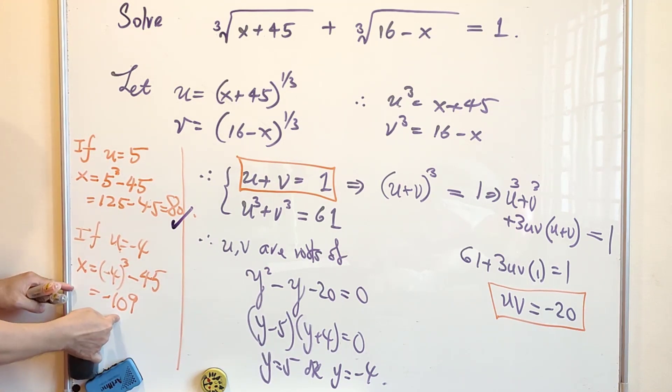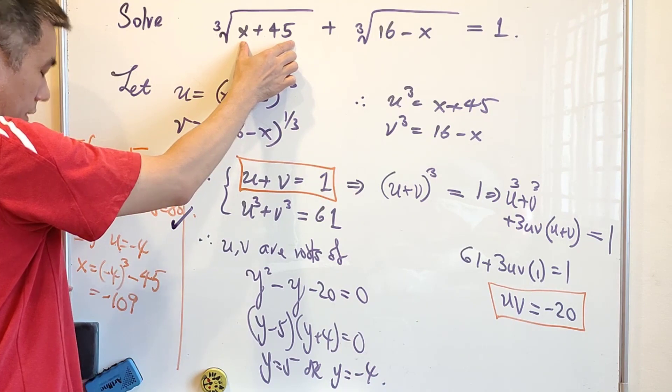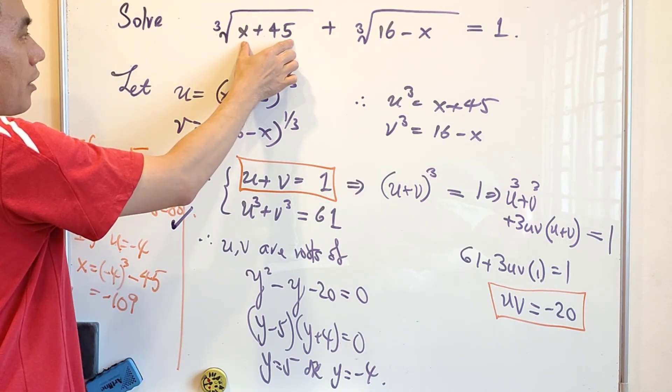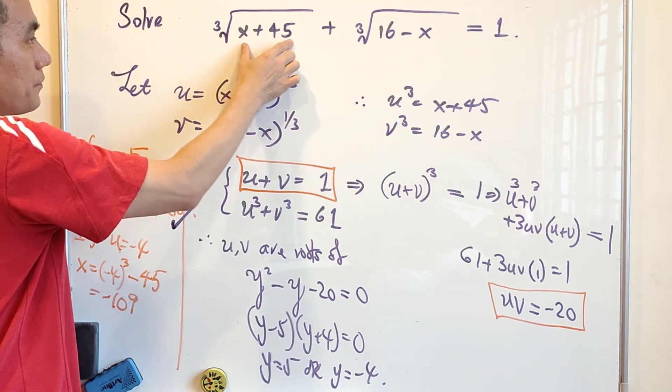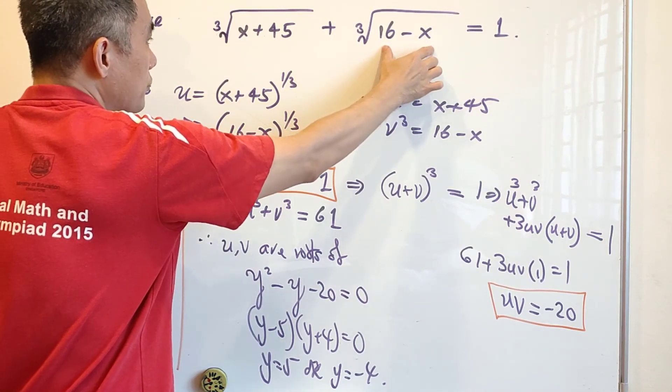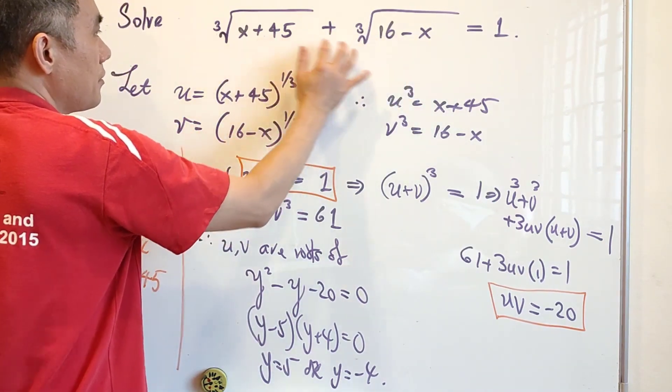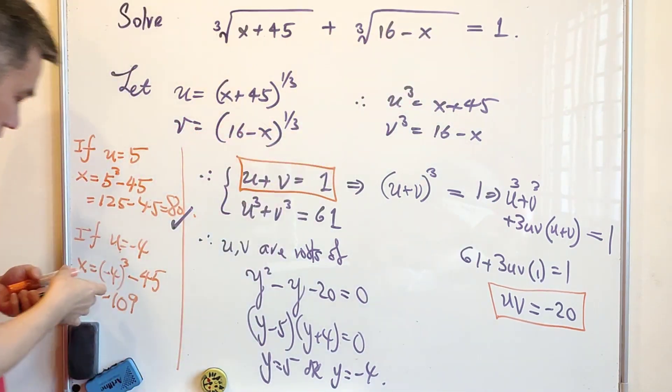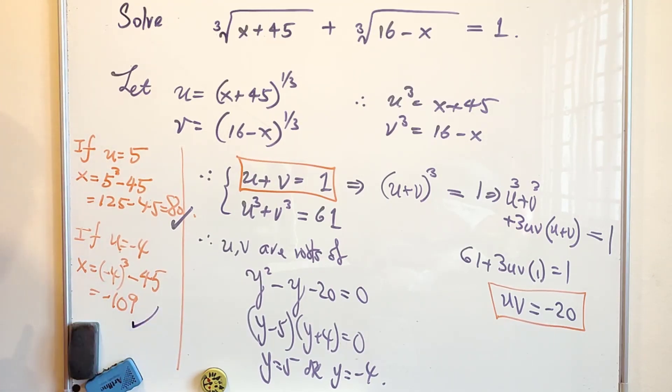How about negative 109? When x equals to negative 109, this is cube root of negative 64 and this is cube root of 125. Again, it is negative 4 plus 5 equals to 1. So both of them are correct.